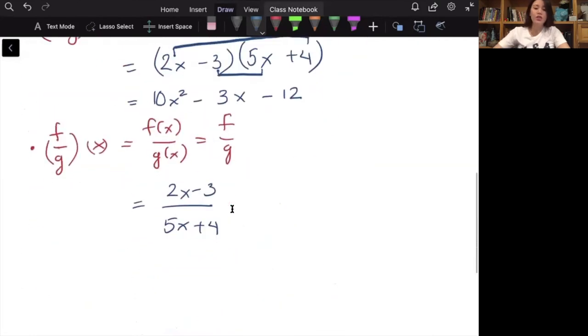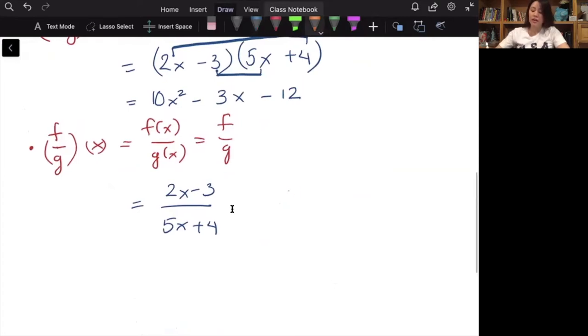But when we divide two numbers, once I have a denominator, there is a potential that the denominator can be zero. So for example, if I plug in x equal negative 4/5 here, 5 times negative 4/5 plus 4, the 5 cancels, negative 4 plus 4, that's zero. So when I have x equal negative 4/5, I will produce a zero in the denominator, which is not allowed.